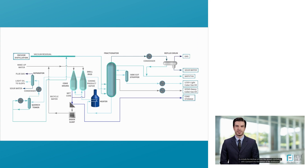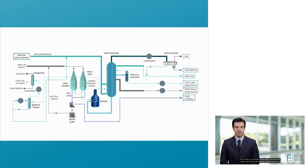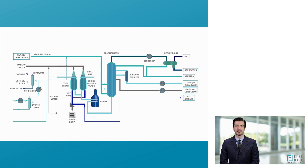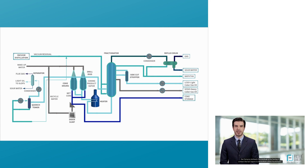Initially, the residual oil from the vacuum distillation unit is pumped into the bottom of the distillation column, called the main fractionator. From there, it is pumped, along with some injected steam, into the fuel-fired furnace and heated to its thermal cracking temperature. The injected steam helps to minimize the deposition of coke within the furnace tubes. Pumping the incoming residual oil into the bottom of the main fractionator, rather than directly into the furnace, preheats the residual oil by having it contact the hot vapors in the bottom of the fractionator. At the same time, some of the hot vapors condense into a high boiling liquid which recycles back into the furnace along with the hot residual oil.